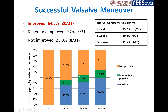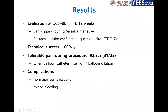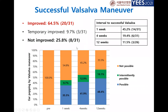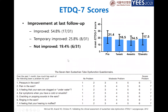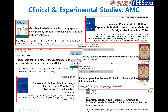As a result, we could technically perform balloon dilation successfully in all patients. The Valsalva maneuver improved in 64% of patients, since preoperatively no patient could perform the Valsalva maneuver successfully. About 65% could perform the Valsalva maneuver three months later, which was very successful. However, 35% were not successful. There was also improvement in ETDQ scores and overall improvement, and we reported our results.